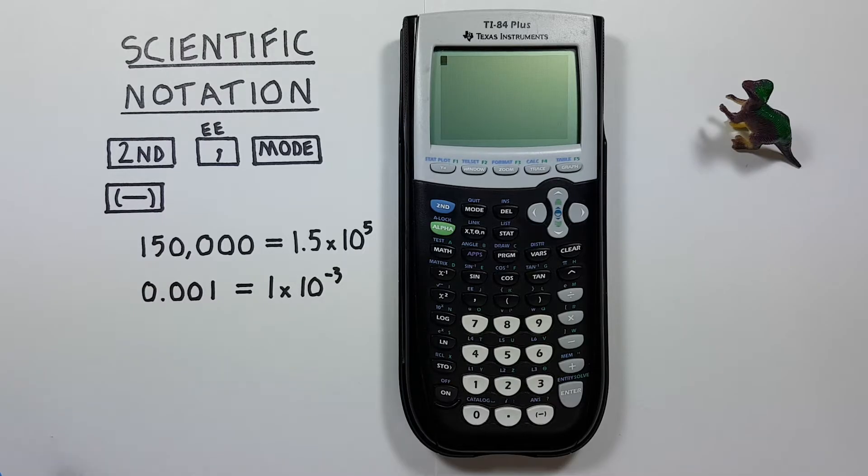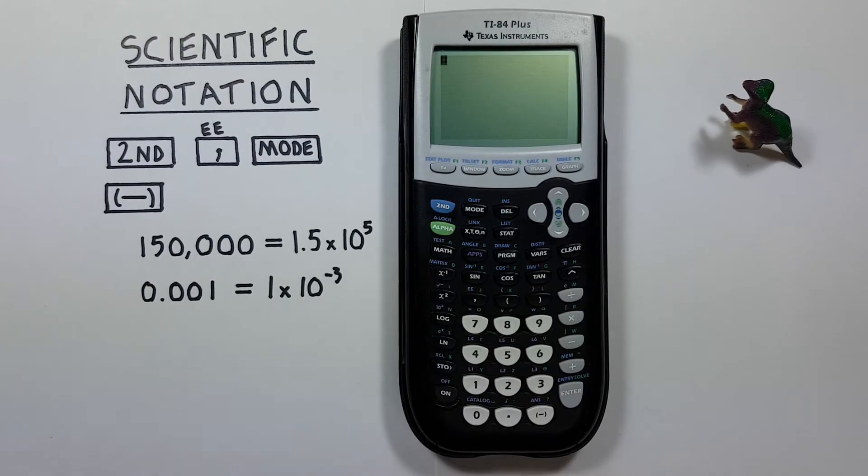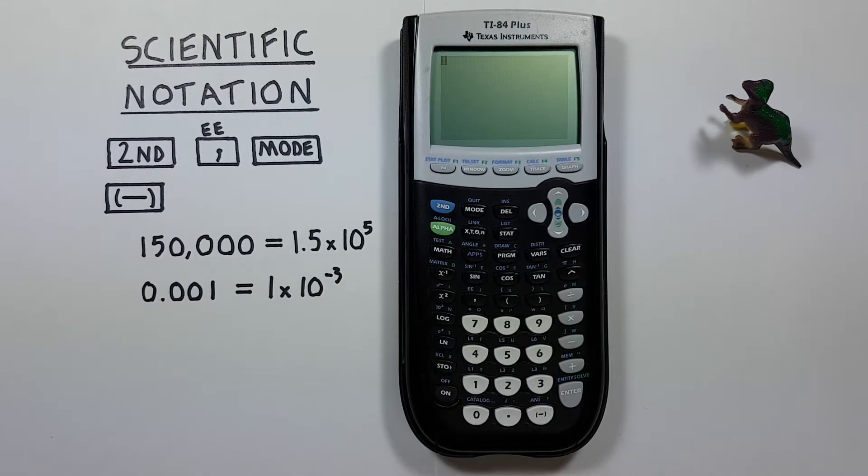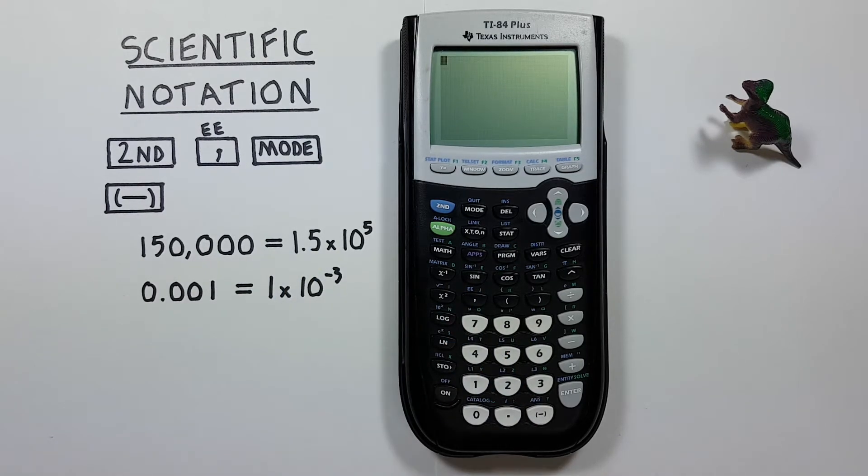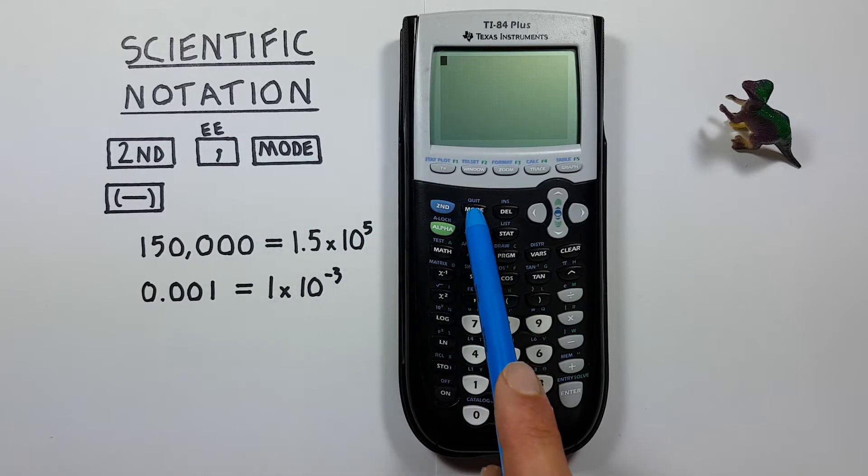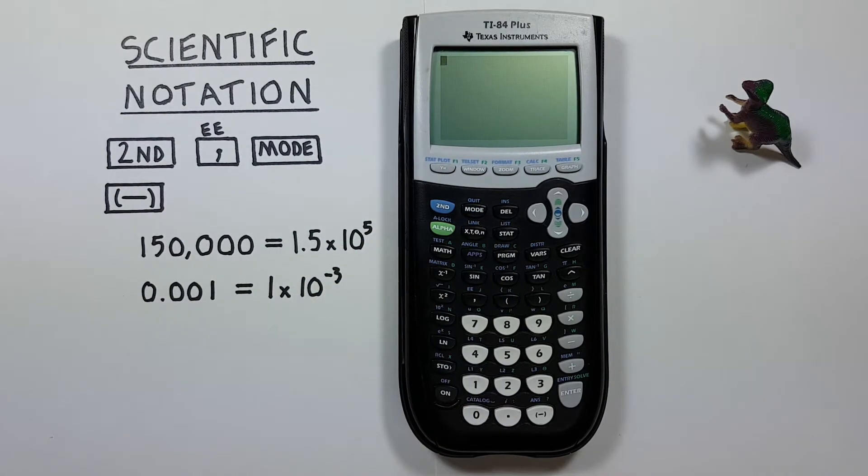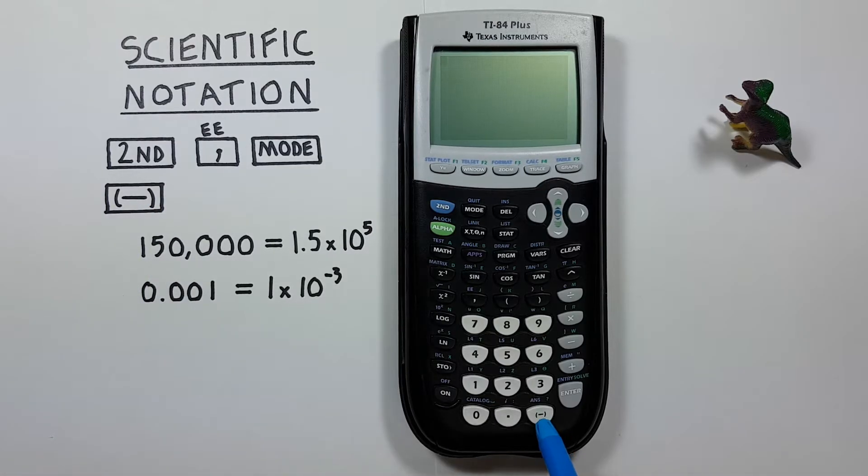To do this we'll be using the second function key located here, the comma key with the second function of EE located here, the mode key located here, and the negative key located down here at the bottom.